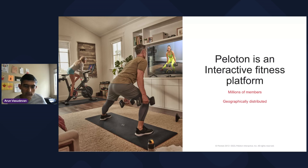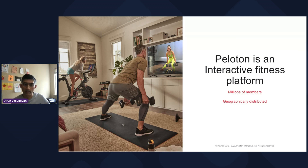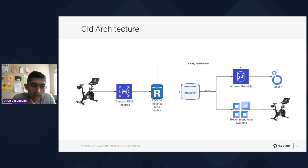Peloton is an interactive fitness platform, popular across the world and used by millions of members. It started with a stationary bike and has now branched out to tread, rower, app, guide, and multiple modalities. In terms of the architecture, here is a high-level overview of our old architecture — all the metrics from various workouts are pushed onto an RDS PostgreSQL database.